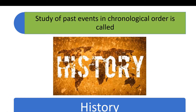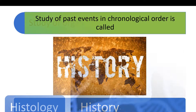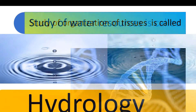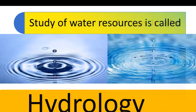Study of past events in chronological order is called History. Study of organization of tissues is called Histology. Study of water resources is called Hydrology.